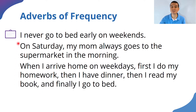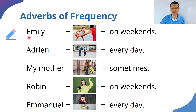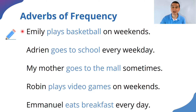I hope you understood the examples. Using those as a reference, I'm going to ask you to complete some activities. The first one is to describe what each person does using the cues provided. You have some names and pictures that indicate what activity we're referring to and when it happens or how frequently. Please pause the video, complete the activity, and I will show you the answers in a moment.